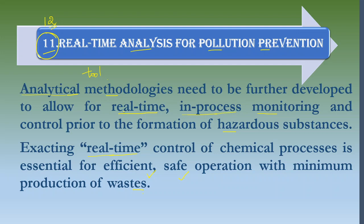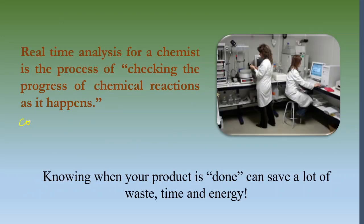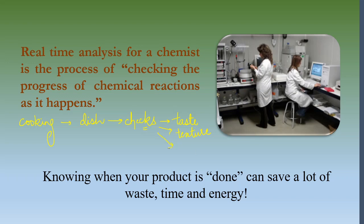Let me give one more example from daily life: cooking. If you are preparing a dish, that is essentially a chemical reaction taking place — that is your process. You have to in-process monitor it with the help of some tool. We have different checks: sometimes we check for taste, we take out a sample of the food and check it. If the taste is not right, we can add different supplements like salt and spices. We can also check the texture — if the water content is too high or too low, we decide accordingly.